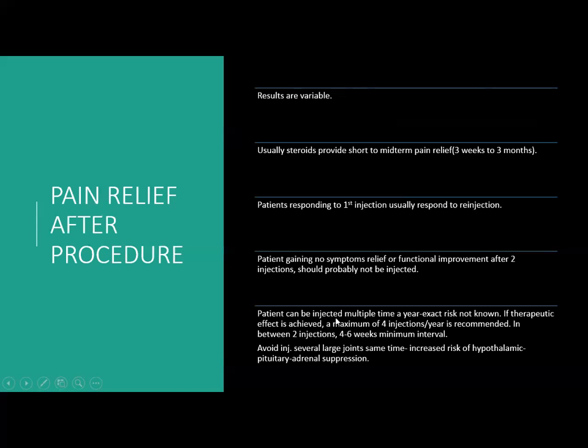We cannot inject more than four injections per year. If the patient is not improving after two injections, we should generally not inject a third time. In Canada we followed a rule of three injections — if no improvement after three, we would defer the patient and advise their clinician to seek alternative treatments. Also, injecting excessive steroids can lead to hypothalamic-pituitary-adrenal axis suppression, which must be taken into account.